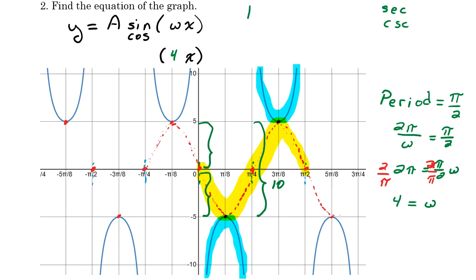Now remember, technically, the absolute value of A is the amplitude. So the absolute value of A is going to be 5. So our A value is either 5 or negative 5. And that's going to depend on whether we need our graph to reflect over the x-axis.